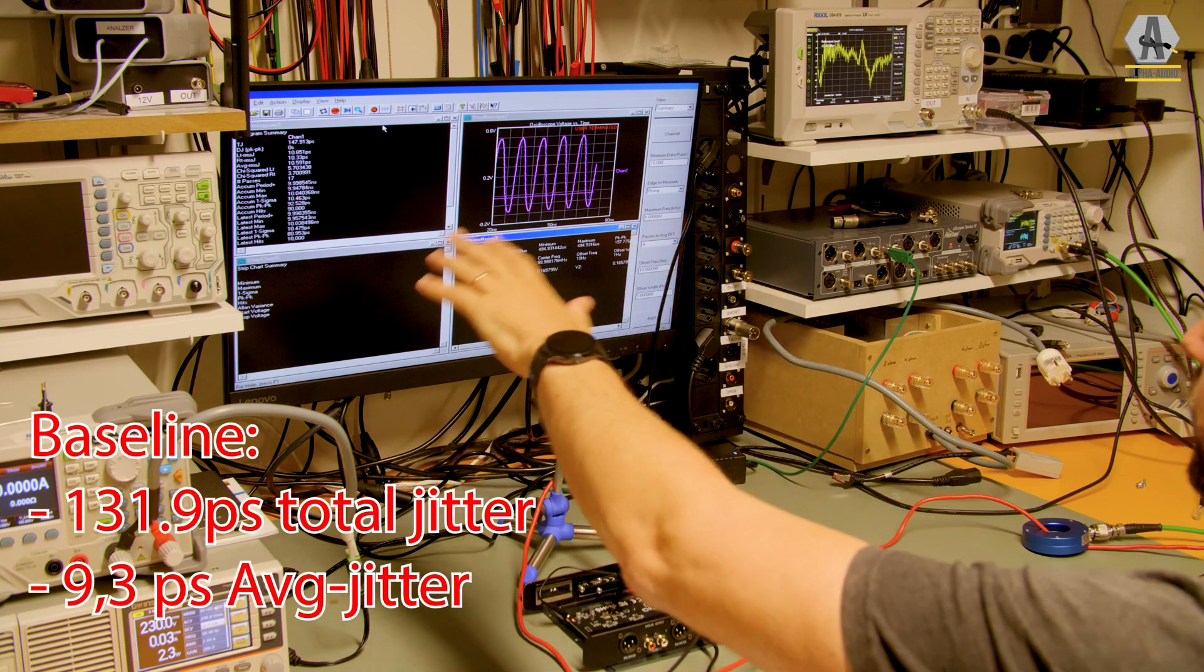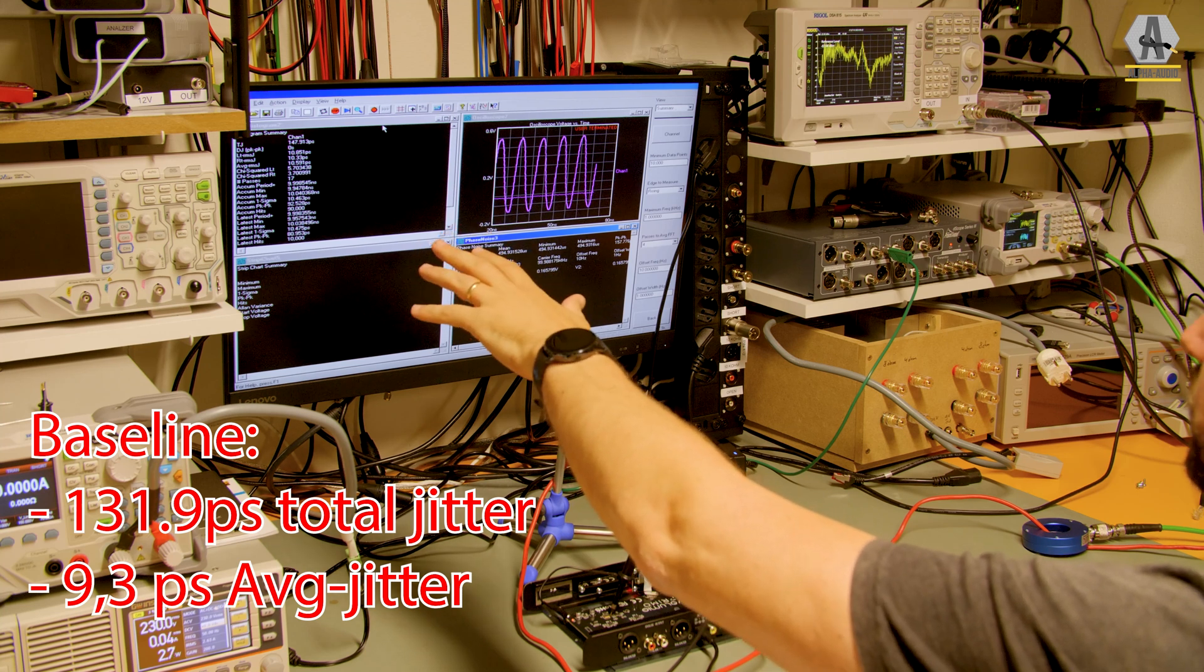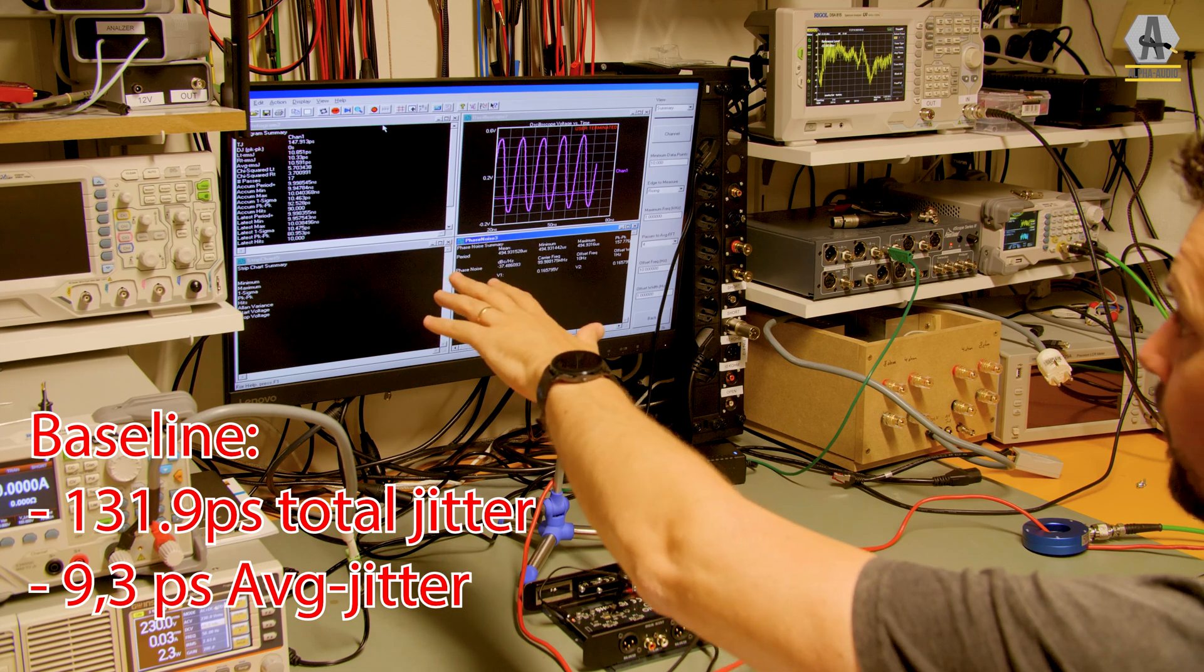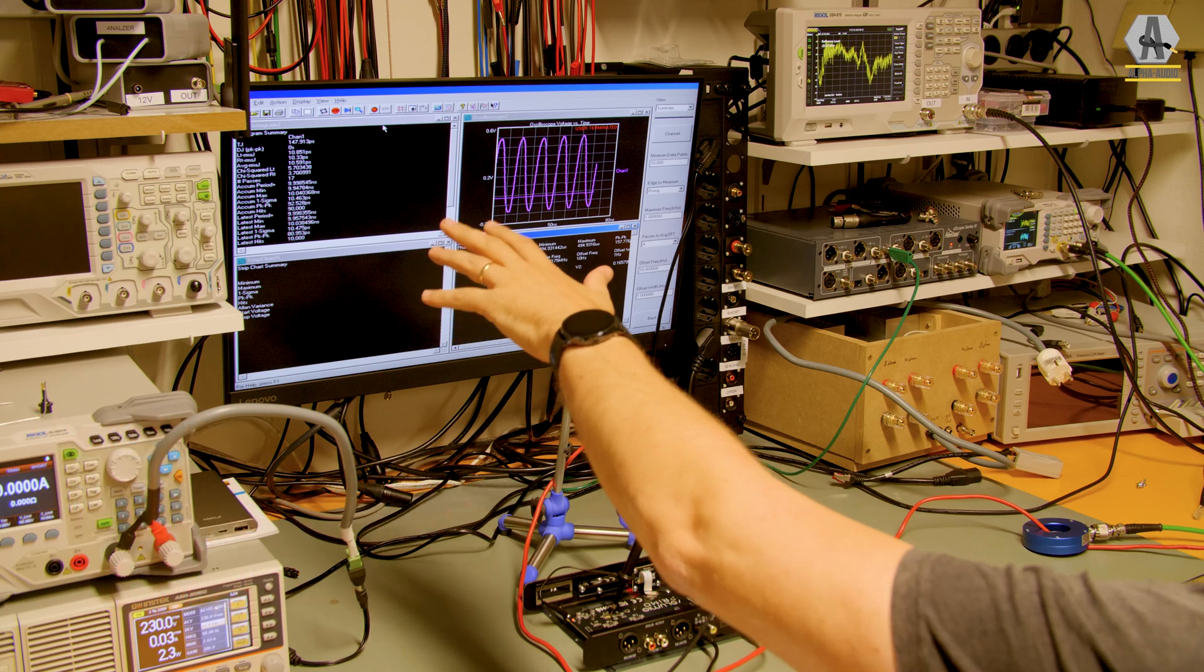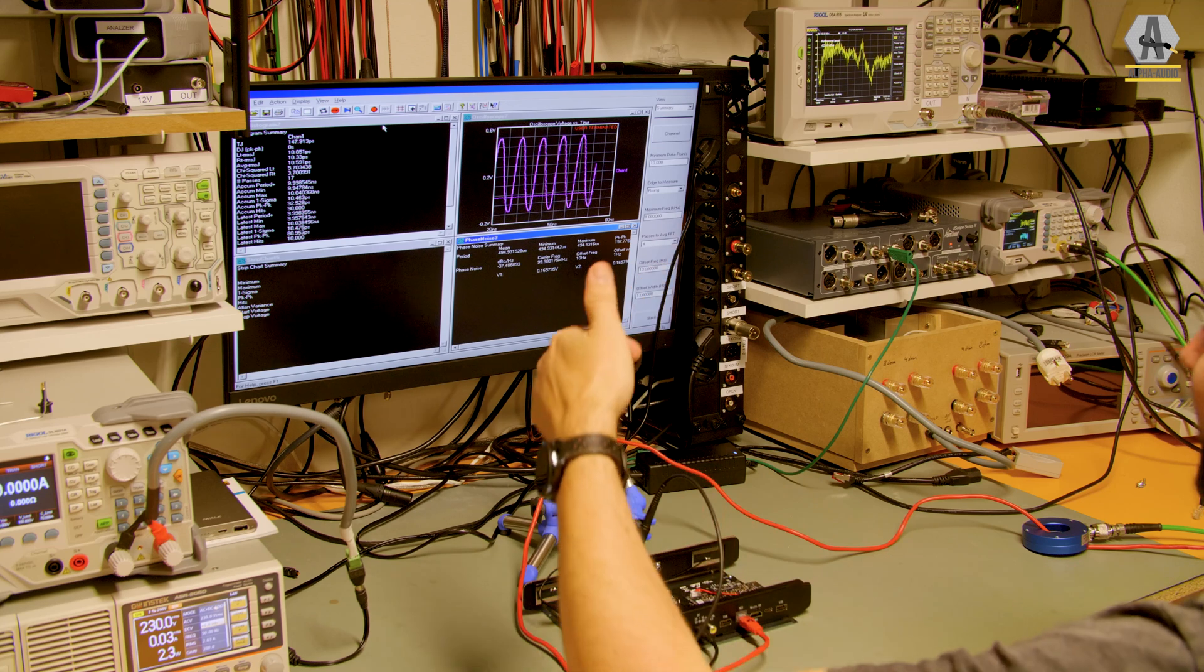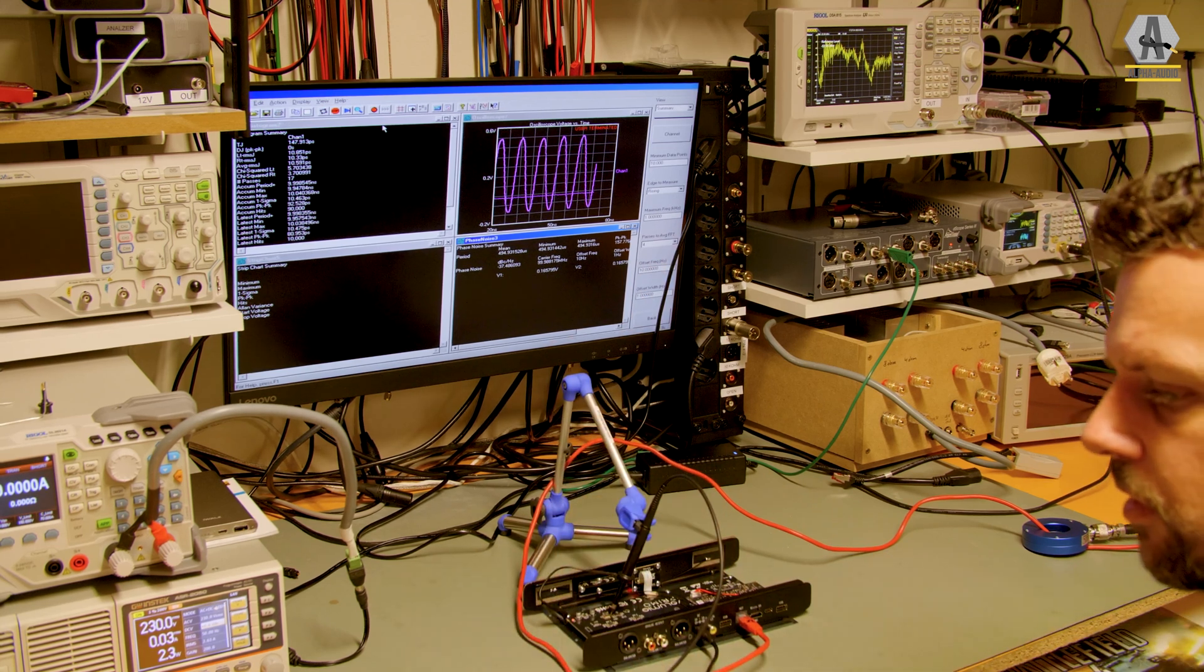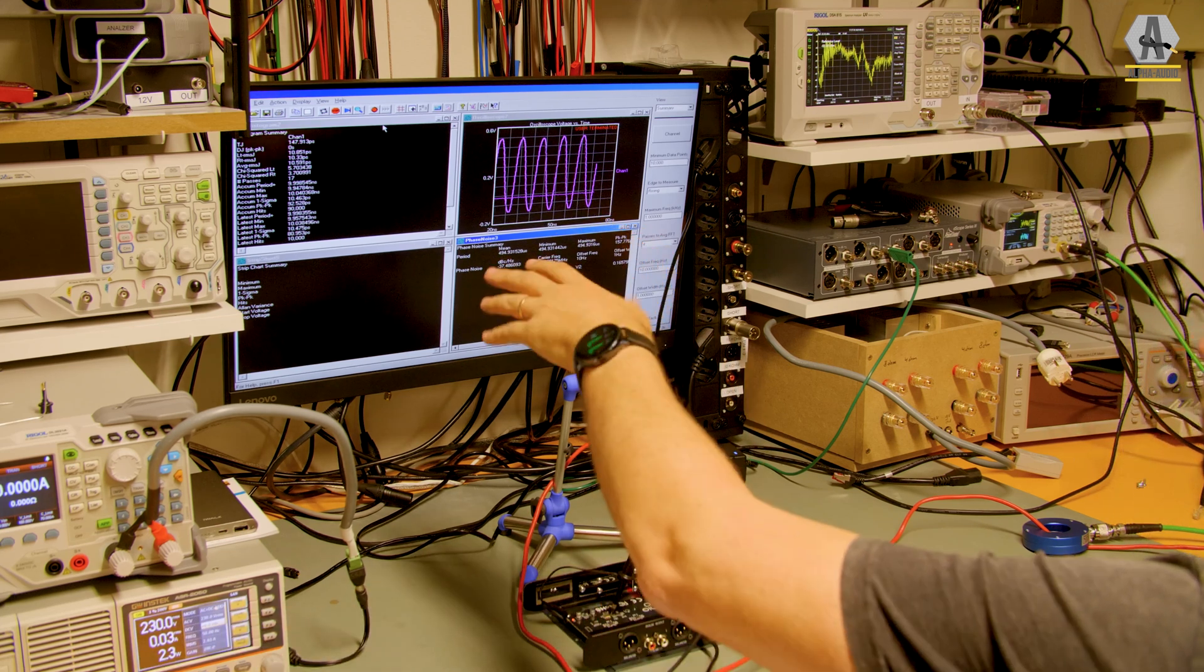So what can we conclude? We went from a total jitter of around 130 or 135 and 9.3 picoseconds of average jitter to almost 11, and now it's 10.6. And a phase noise of minus 40 dB. I'm measuring at the clock with a cable and a step-up or buffer amp for the 50 ohm load, so this is not really realistic.